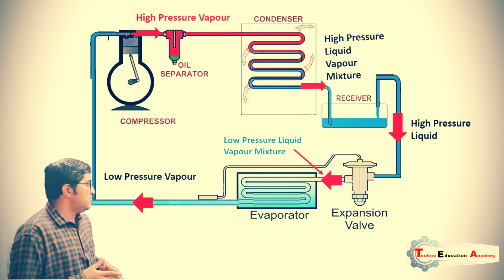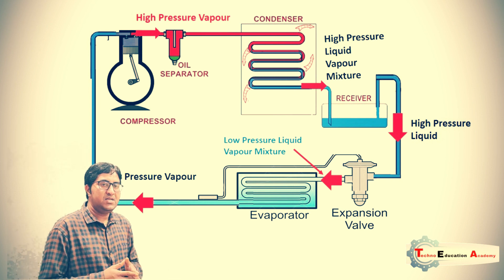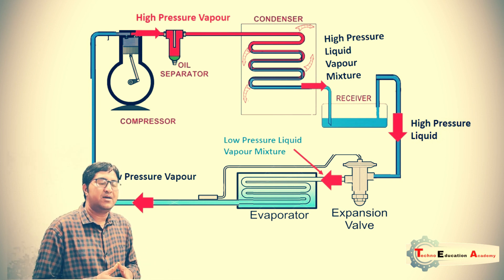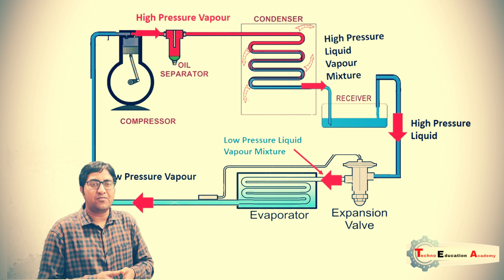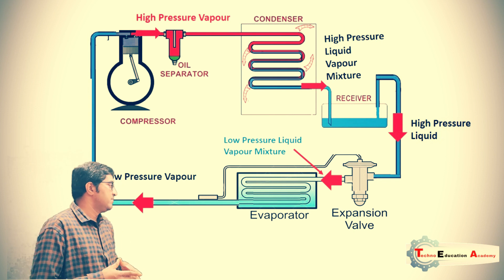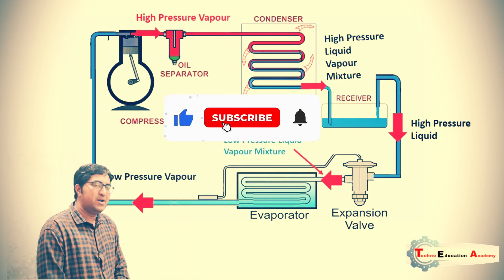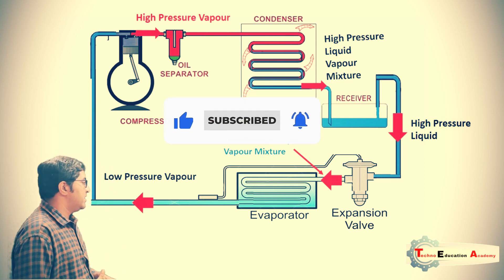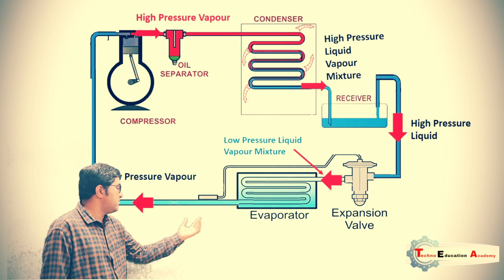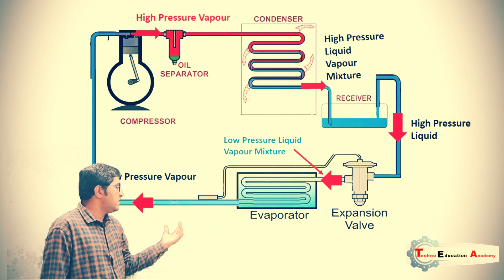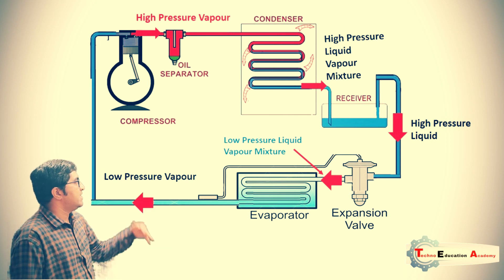This low pressure liquid-vapor mixture enters into the evaporator — which is our freezer. In the evaporator, latent heat is transferred, meaning the temperature remains constant while there is a change of phase. The evaporator is generally made of aluminum and copper, which have high thermal conductivity. The low pressure liquid refrigerant is converted into low pressure vapor.